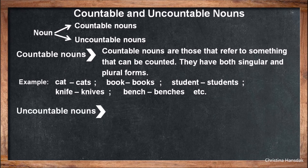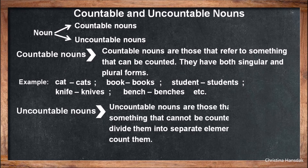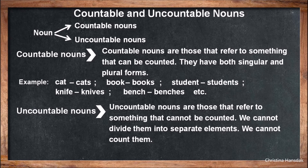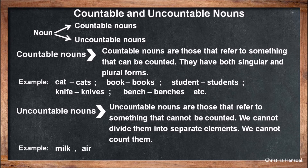Uncountable nouns are those that refer to something that cannot be counted. We cannot divide them into separate elements. Examples: milk, air, water, smoke, rice, sugar, etc.